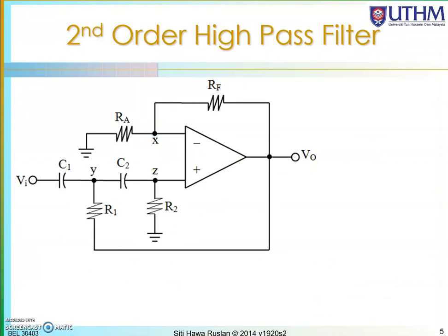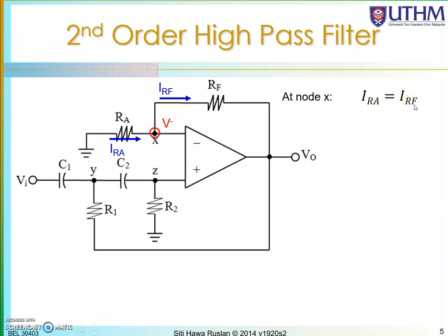For this high pass filter circuit, at node X — which is the V-minus input to the negative terminal — I use Kirchhoff's Current Law to get the transfer function. I call the current through Ra as 'Ira' and the current leaving the node as 'Irf'. There is no current entering the op-amp, so I arrive at: Ira equals Irf. For Ira, flowing from ground (zero) to this node: it is zero minus V-minus divided by Ra. For Irf, flowing from V-minus to Vo: it is V-minus minus Vo divided by Rf.